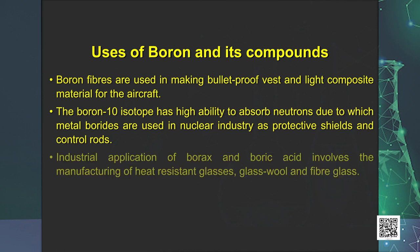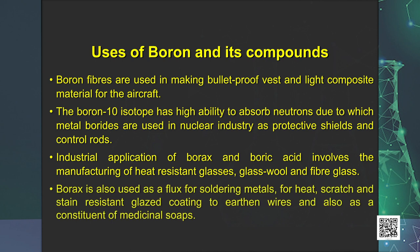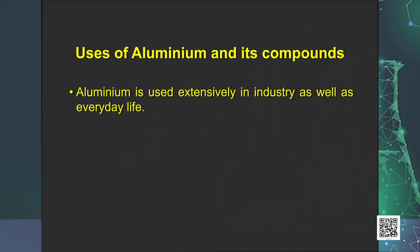Industrial applications of borax and boric acid include the manufacturing of heat-resistant glasses, glass wool and fiberglass. Borax is also used as a flux for soldering metals, for heat-, scratch- and stain-resistant glazed coatings on earthenware, and as a constituent of medicinal soaps. Aluminium is a bright silvery-white metal with high tensile strength and high electrical and thermal conductivity, used extensively in industry as well as everyday life.